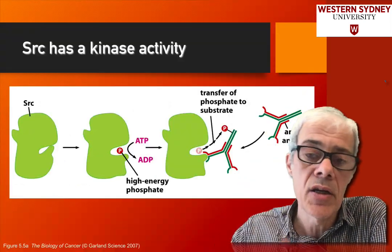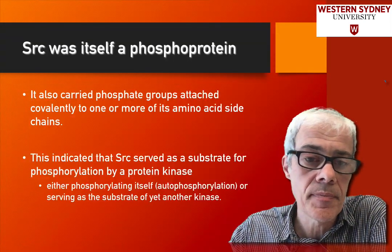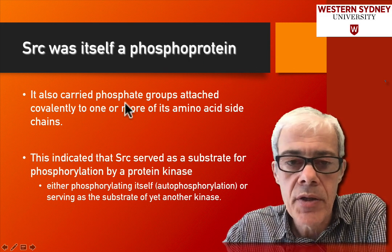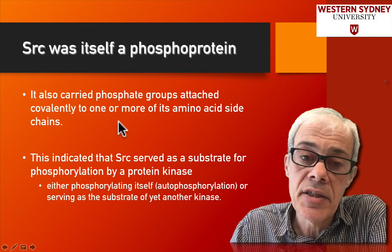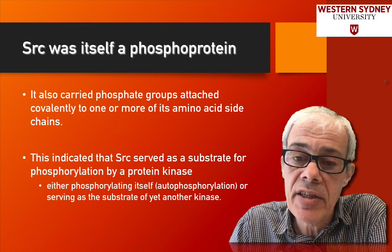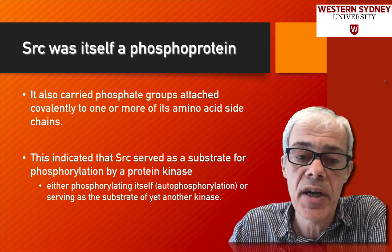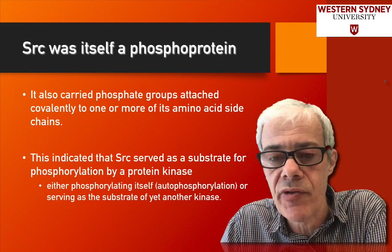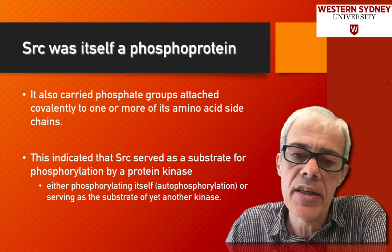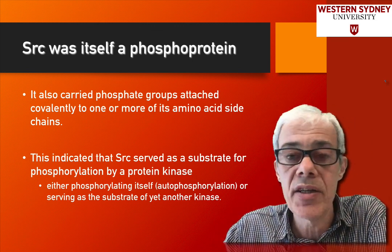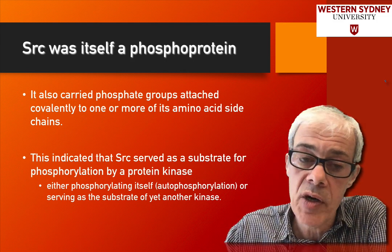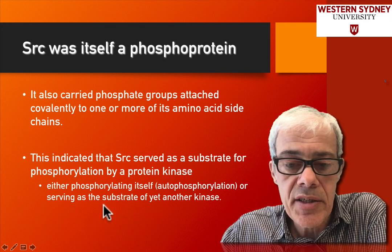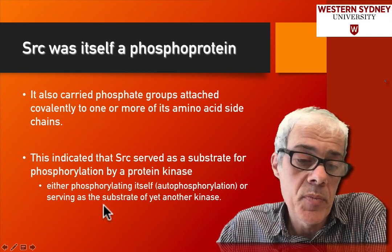Src itself is also phosphorylated. The question is whether Src autophosphorylates itself or whether something else phosphorylates it. Src does autophosphorylate itself, so one of the targets of Src is itself, as well as other cellular proteins. This autophosphorylation helps Src regulate its own activity.